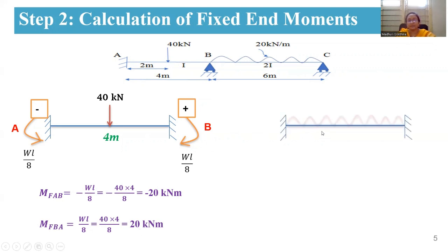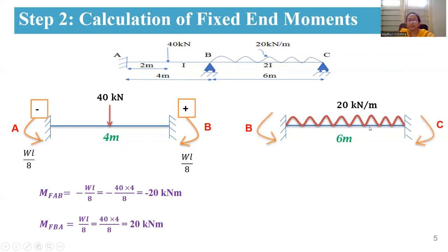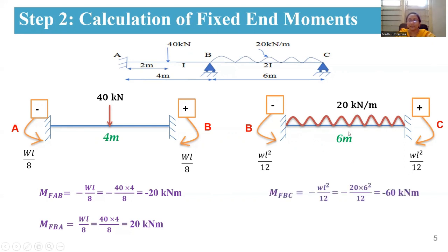For span BC with a UDL of 20 kN/m over 6 meters: hogging moments develop at B and C. At B, the direction is anticlockwise so it is negative, using the formula WL²/12. At C, it is clockwise so positive, also WL²/12. This gives mf_BC = −60 kN·m and mf_CB = +60 kN·m.